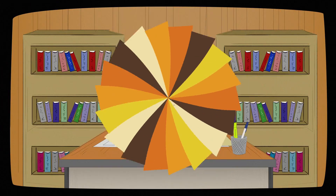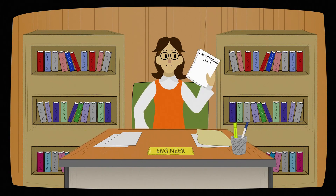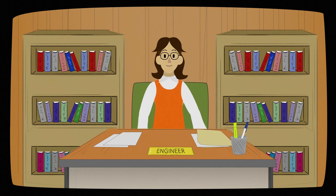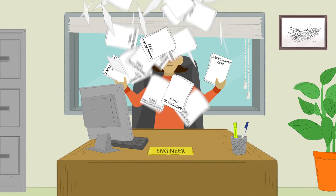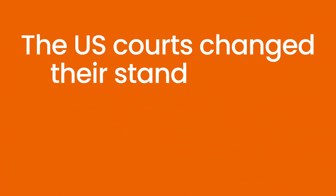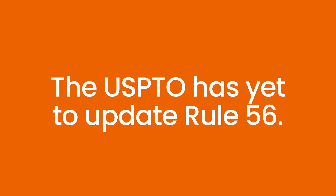Rule 56 dates back to the 1970s. In that pre-internet era, the USPTO relied heavily on the patent applicant to share background information on advancements within their respective field of technology. Times have changed, but unfortunately Rule 56 has not kept up. Even though U.S. courts changed their standard for compliance with the duty of candor in 2012, the USPTO has yet to update Rule 56.